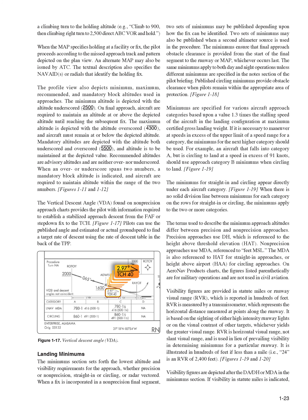If it is necessary to maneuver at speeds in excess of the upper limit of a speed range for a category, the minimums for the next higher category should be used. For example, an aircraft that falls into category A but is circling to land at a speed in excess of 91 knots should use approach category B minimums when circling to land. The minimums for straight-in and circling appear directly under each aircraft category. When there is no solid division line between minimums for each category on the rows for straight-in or circling, the minimums apply to the two or more categories. The terms used to describe minimum approach altitudes differ between precision and non-precision approaches. Precision approaches use DH, which is referenced to the height above threshold elevation, HAT. Non-precision approaches use MDA, referenced to feet MSL. The MDA is also referenced to HAT for straight-in approaches, or height above airport, HAA, for circling approaches. On AeroNav Products charts, the figures listed parenthetically are for military operations and are not used in civil aviation.